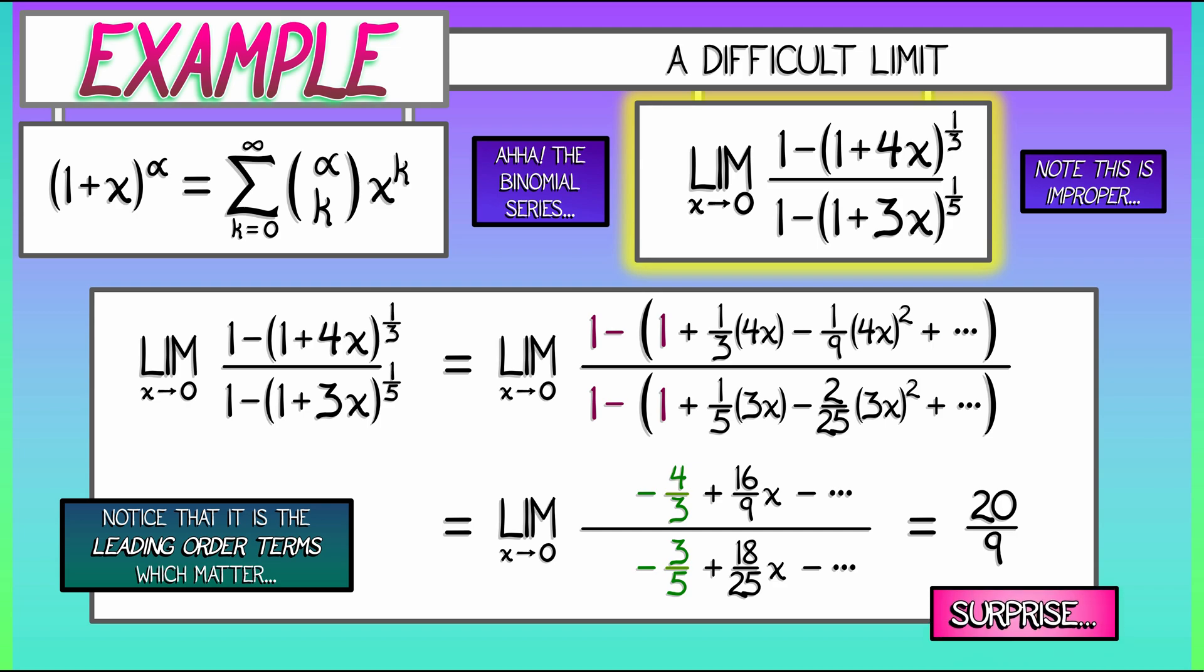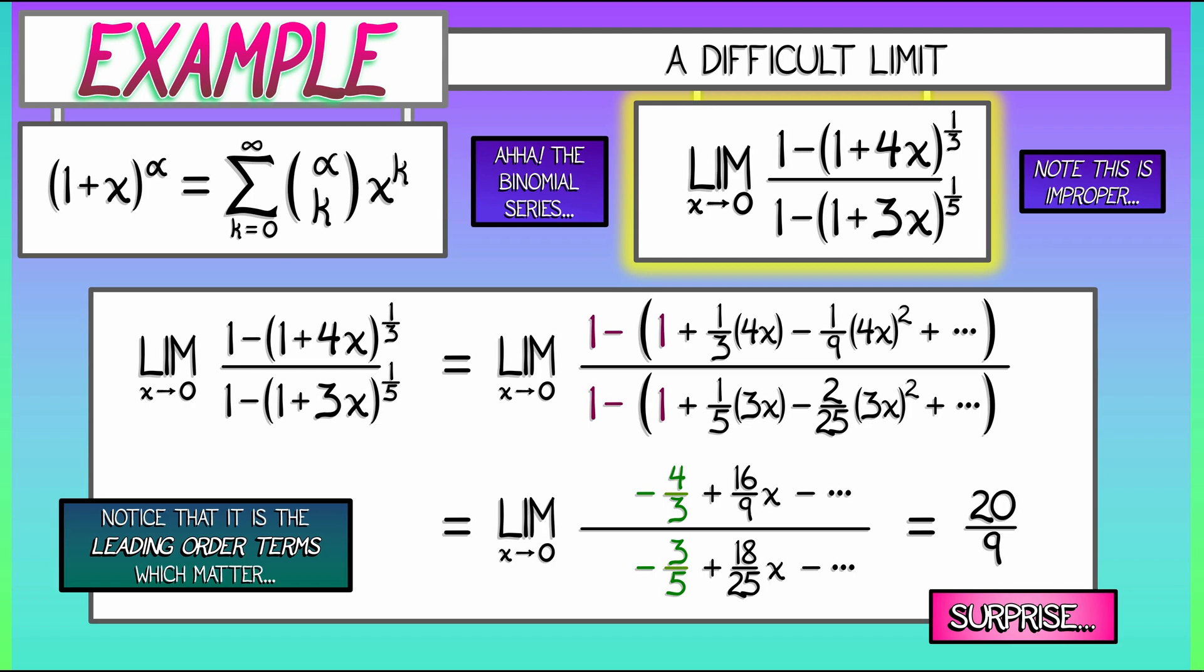That's a little bit surprising to me. Sometimes you look at these limits, you're like, I know what that one's going to work out to be. But this one, not so much. You look at it, and your brain does not say, oh yeah, wow, twenty-ninths. Yeah, I know that. So, this is a good example of how to use Taylor Expansion to evaluate some really difficult improper limits.